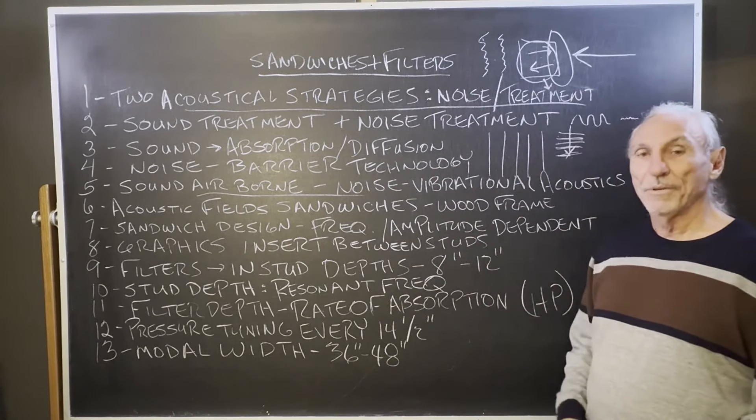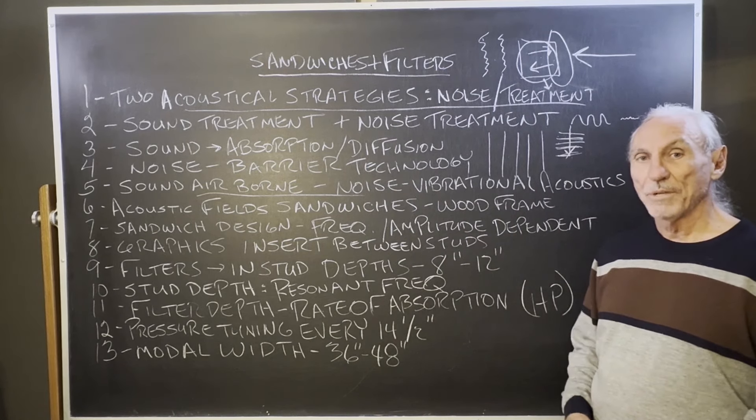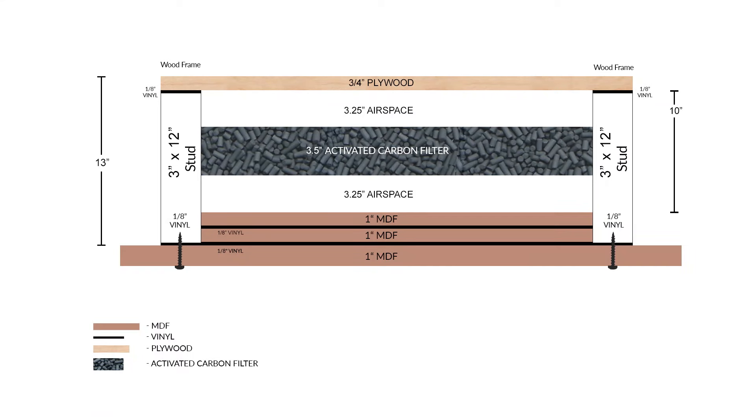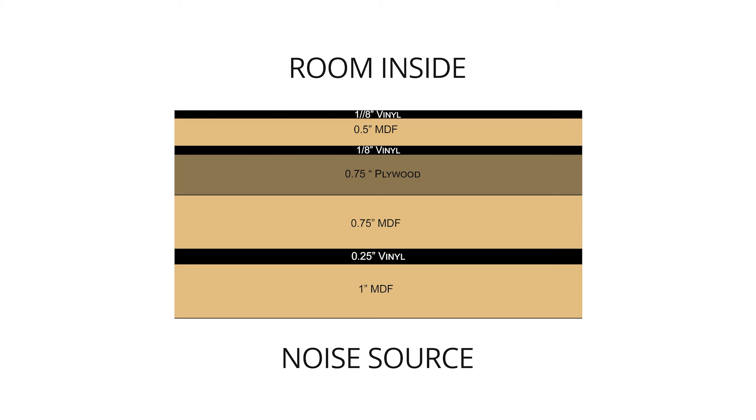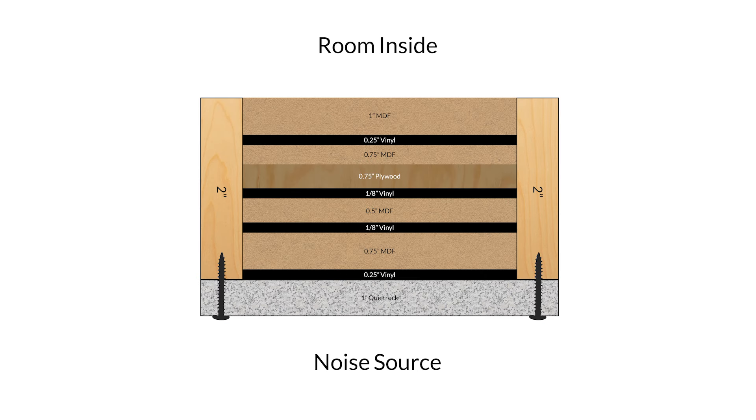Look at some of the different options here in sandwiches that we've used in the past. See, there's different materials involved. You can see the arrangement of the materials are different. The whole thickness of the sandwich is different. Sometimes we might need a two by eight stud, sometimes two by six, sometimes two by ten, sometimes two by twelve.